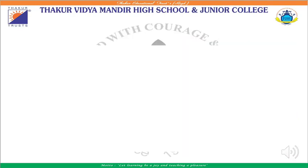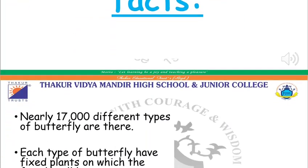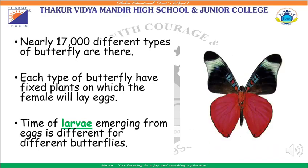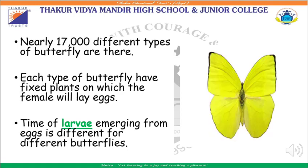This was about the life cycle of the plain tiger butterfly. In the same way, different types of butterflies go through the same life stages. Now let us see some interesting facts. You will be surprised to know that there are nearly 17,000 different types of butterfly. Each type of butterfly has fixed plants on which the female will lay eggs.